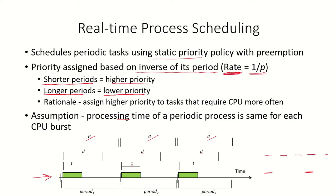The rationale is that we assign higher priority to tasks that require the CPU more often — that means they are entering the system very frequently. We also assume that the processing time of the process is the same for each CPU burst. So when it first arrives it takes time T, and every subsequent arrival after period P also requires exactly T time units.